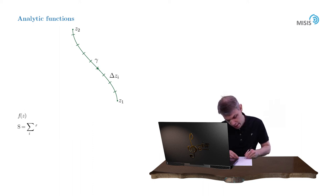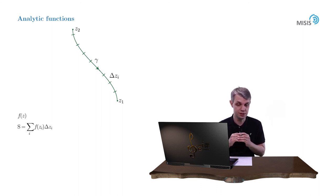Then we can split the contour into linear segments delta zi and compose the sum over i f of zi times delta zi, where the value of the function f of zi is taken at some point inside the segment delta zi. Then by shrinking the step of our partition delta zi, we obtain a well-defined limit which is called an integral of a complex function along contour gamma.